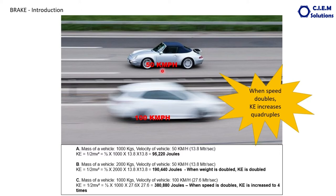Now keeping the speed at 50 km/h and adding another 1,000 kg — so the total weight becomes 2,000 kg — the kinetic energy becomes: ½ × 2000 × 13.8 × 13.8 = 190,440 Joules. That is exactly double the first case. So when the vehicle mass is doubled, the kinetic energy also doubles.